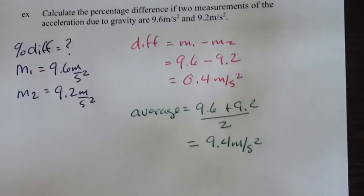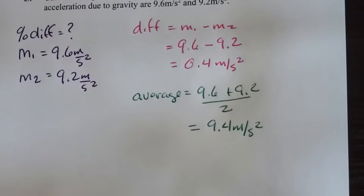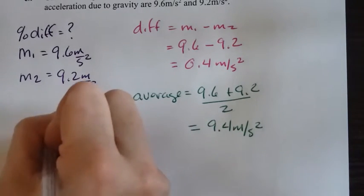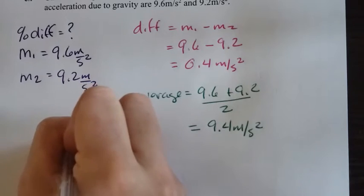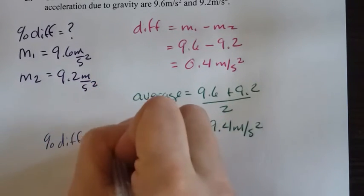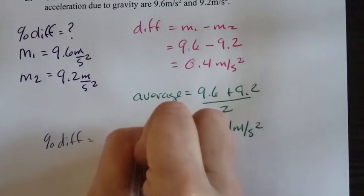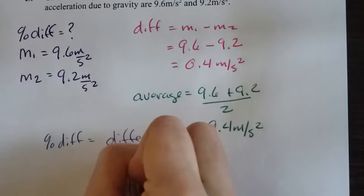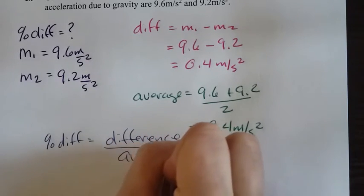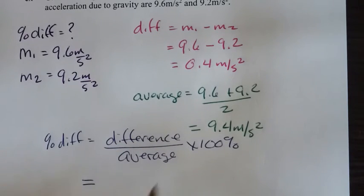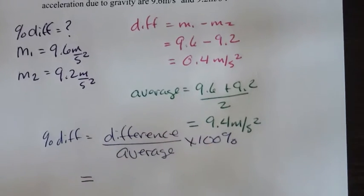Okay, I now have enough information to finish this problem. To figure out the percentage difference, I'm going to take the difference in the measurements and divide it by the average, then multiply by 100%. We found the difference to be 0.04.